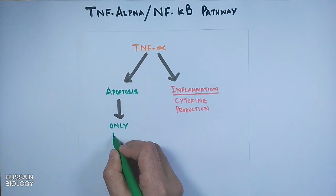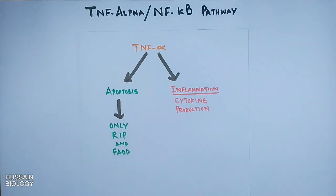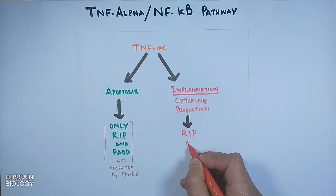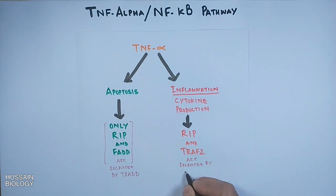In apoptosis, RIP and FADD molecules are the central regulatory molecules which are regulated by TRADD. In the NF-κB pathway, RIP and TRAF2 are the central regulatory molecules, also regulated by TRADD.